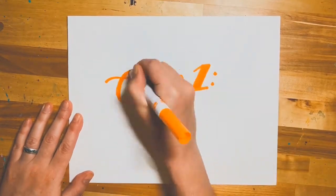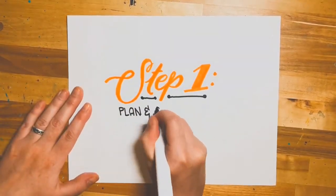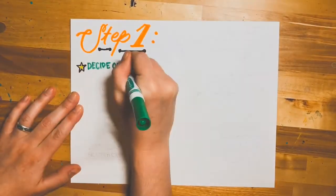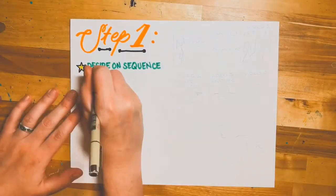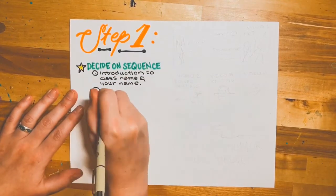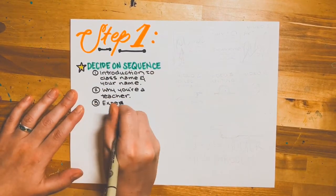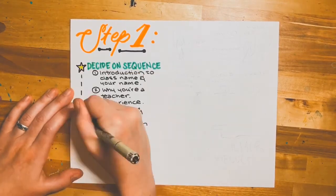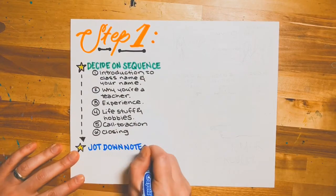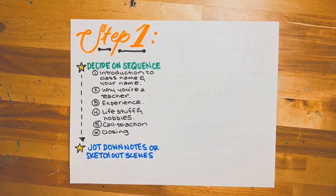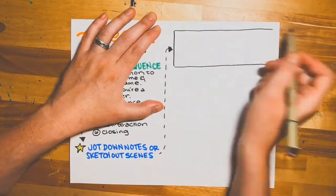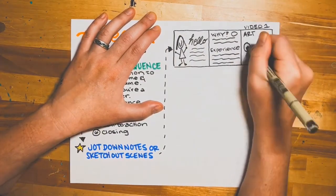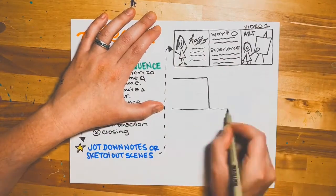Step one: plan and storyboard. The first thing you're going to do is decide on the sequence, which includes an introduction to your class, your name, why you're a teacher, experience, some other life stuff, hobbies, a call to action, and lastly, a closing. Next, jot down some notes or sketch out some scenes. I made a little storyboard here because it's easier for me to think this way. Keep in mind, this does not have to be a beautiful piece of art — it's really just to get out your ideas.